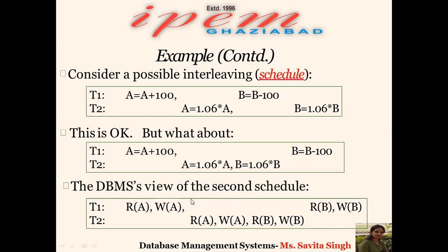From the DBMS view of the second schedule: T1 reads A, then writes A after the update. Then T2 reads A, calculates interest, and writes A. Then T2 reads B and writes B with interest. Then T1 reads B and after subtraction writes B. A schedule could be a serial schedule, an equivalent schedule, or a serializable schedule — various types that we will discuss next.